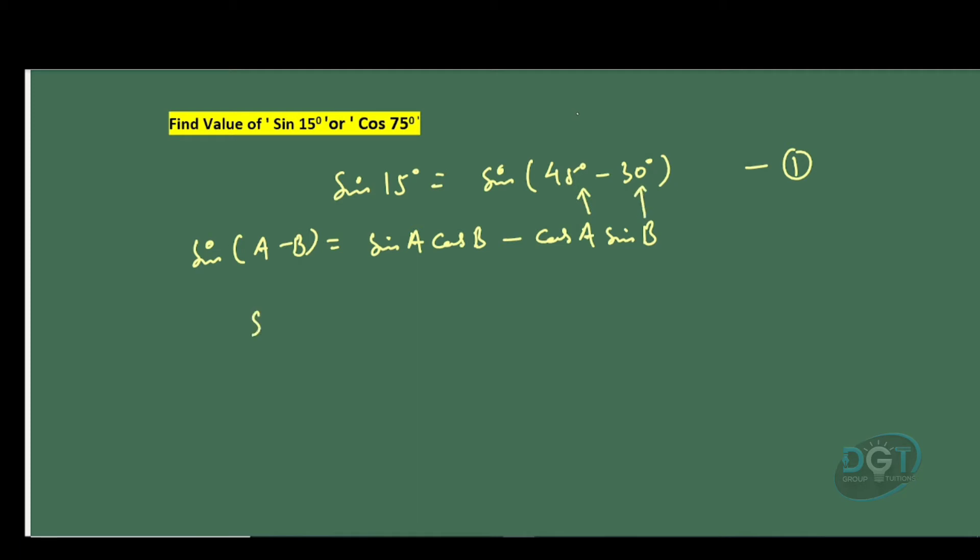Therefore, in equation 1, we'll get sin 15° equals sin 45° cos 30° minus cos 45° sin 30°.